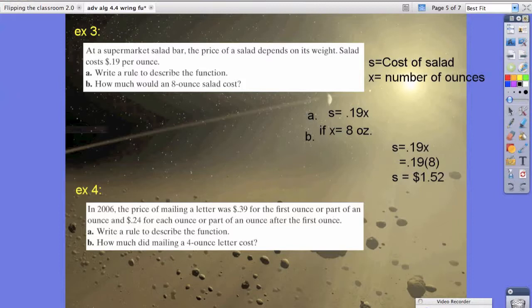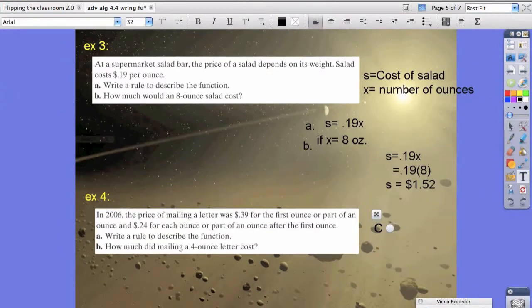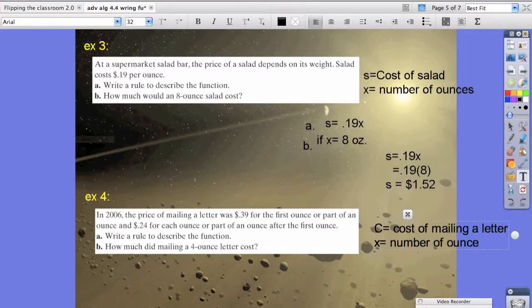So this one is a little bit trickier because they have two different prices per ounce in here. But what we need to consider is the cost, or C, is equal to the cost of mailing a letter. We also know that we have number of ounces. So we're going to say x equals number of ounces.